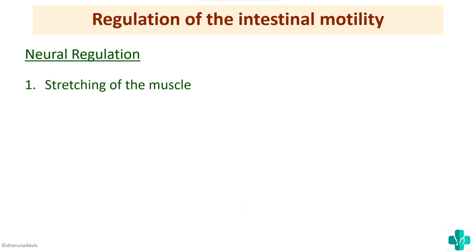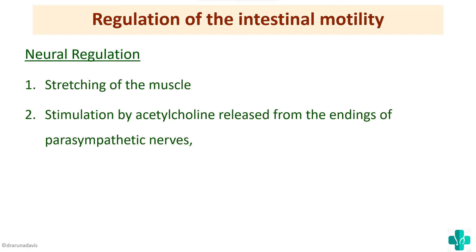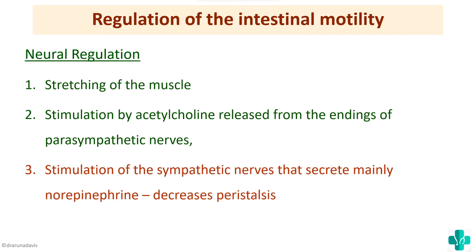The components of neural regulation include: first, stretching of the muscle — sensory neurons detect the presence of a bolus inside the gut and increase motility; second, stimulation by acetylcholine released from parasympathetic nerve endings, which increases intestinal motility, consistent with the parasympathetic 'rest and digest' function. Sympathetic nerves secrete mainly norepinephrine and decrease peristalsis, consistent with the fight-or-flight function.